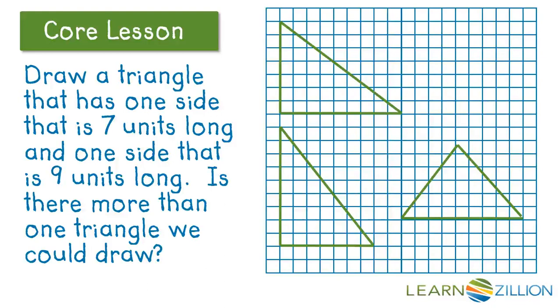So you can make more than one different type of triangle, and of course, you could also do a triangle with the base of 7 and then side lengths of 9 as well.